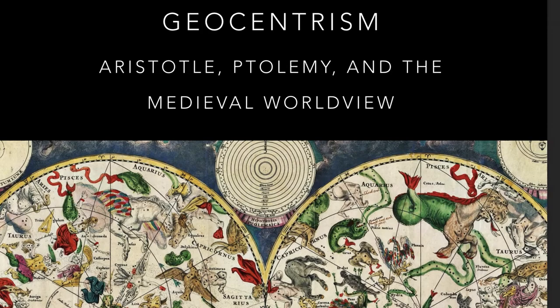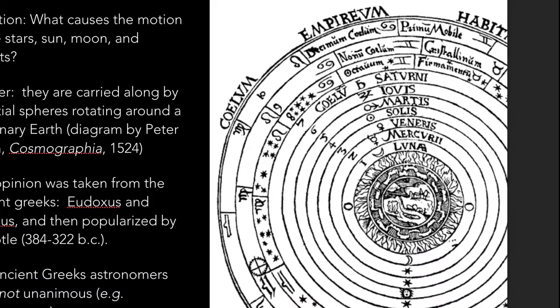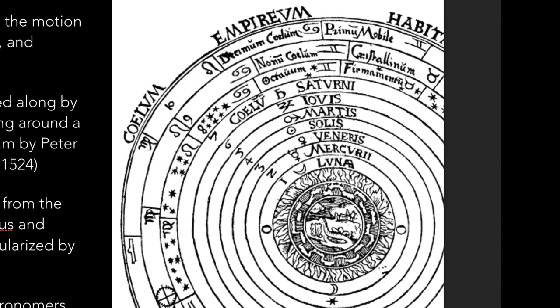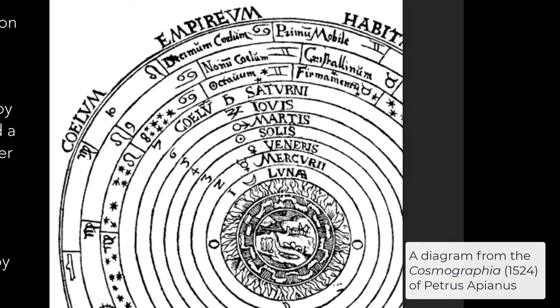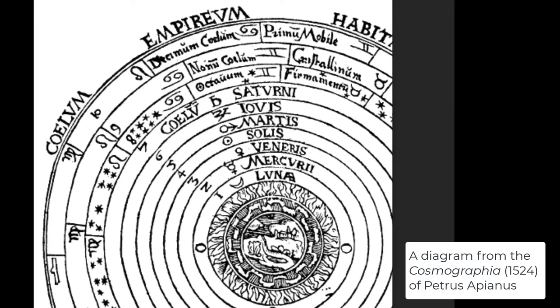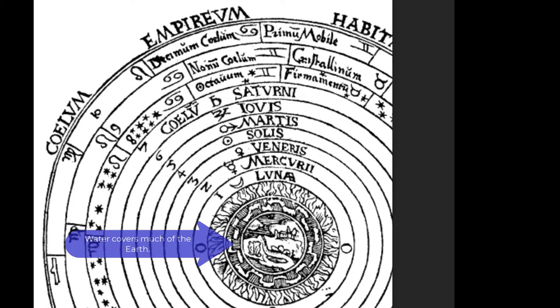I am titling this slide Geocentrism — Aristotle, Ptolemy (who is a later Greco-Roman, North African astronomer), and the medievals. On the right-hand side of this slide I show a diagram drawn by Peter Appian from his Cosmographia in 1524. Of course this is much later than Aristotle, but it captures the overall worldview that Aristotle and many of the Greeks and medievals had.